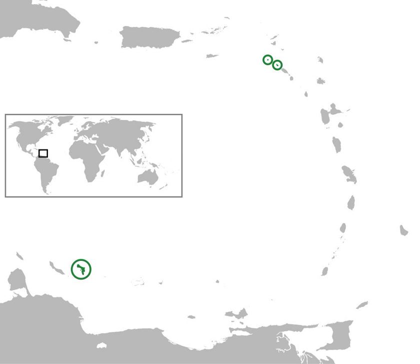Bonaire is one of the Leeward Antilles and is located close to the coast of Venezuela. Sint Eustatius and Saba are in the main Lesser Antilles group and are located south of Sint Martin and northwest of St Kitts and Nevis.